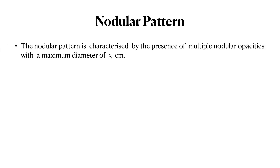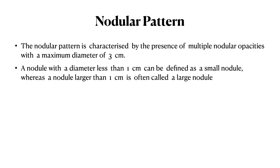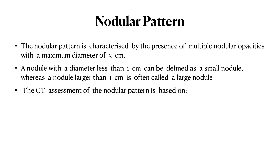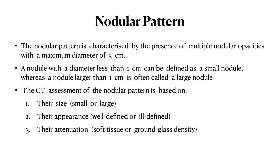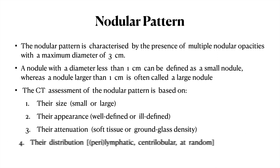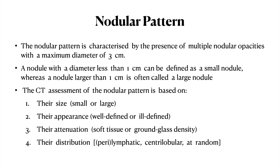A nodular pattern is characterized by the presence of multiple nodular opacities with a maximum diameter of 3 cm. A nodule less than 1 cm is defined as a small nodule, whereas a nodule greater than 1 cm is a large nodule. CT assessment of the nodular pattern is based on size, appearance (well-defined or ill-defined), attenuation (soft tissue or ground glass density), and distribution — whether perilymphatic, centrilobular, or random.